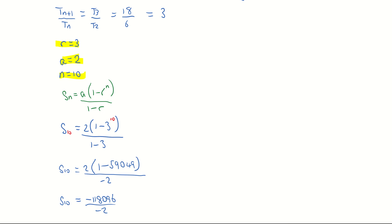I'm dividing that then by negative 2, so dividing my negative 118,096 by minus 2 is giving me a final value for the sum of the first 10 terms of 59,048.